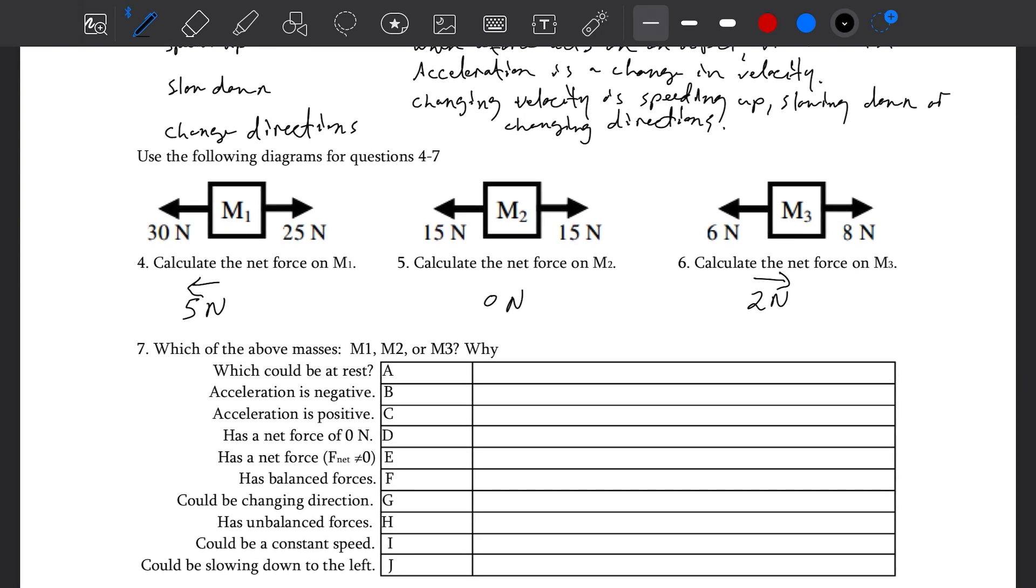Which could be at rest? They could all be at rest. Number 5 has a constant velocity, and that velocity could be zero. It doesn't have to be, but it could be. Number 4 and 6 could be changing directions. At the moment of changing directions, your velocity goes to zero. If you're going forward, then backwards, or backwards, then forwards.